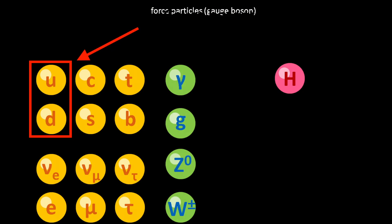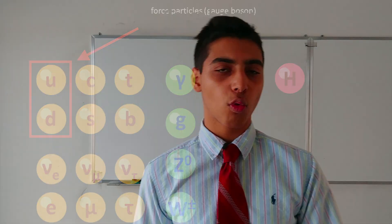The up and down quarks are the most important when talking about protons and neutrons. What differentiates a proton from a neutron? Well, that's its quark composition. A proton consists of two up quarks and one down quark, and a neutron consists of two down quarks and one up quark.